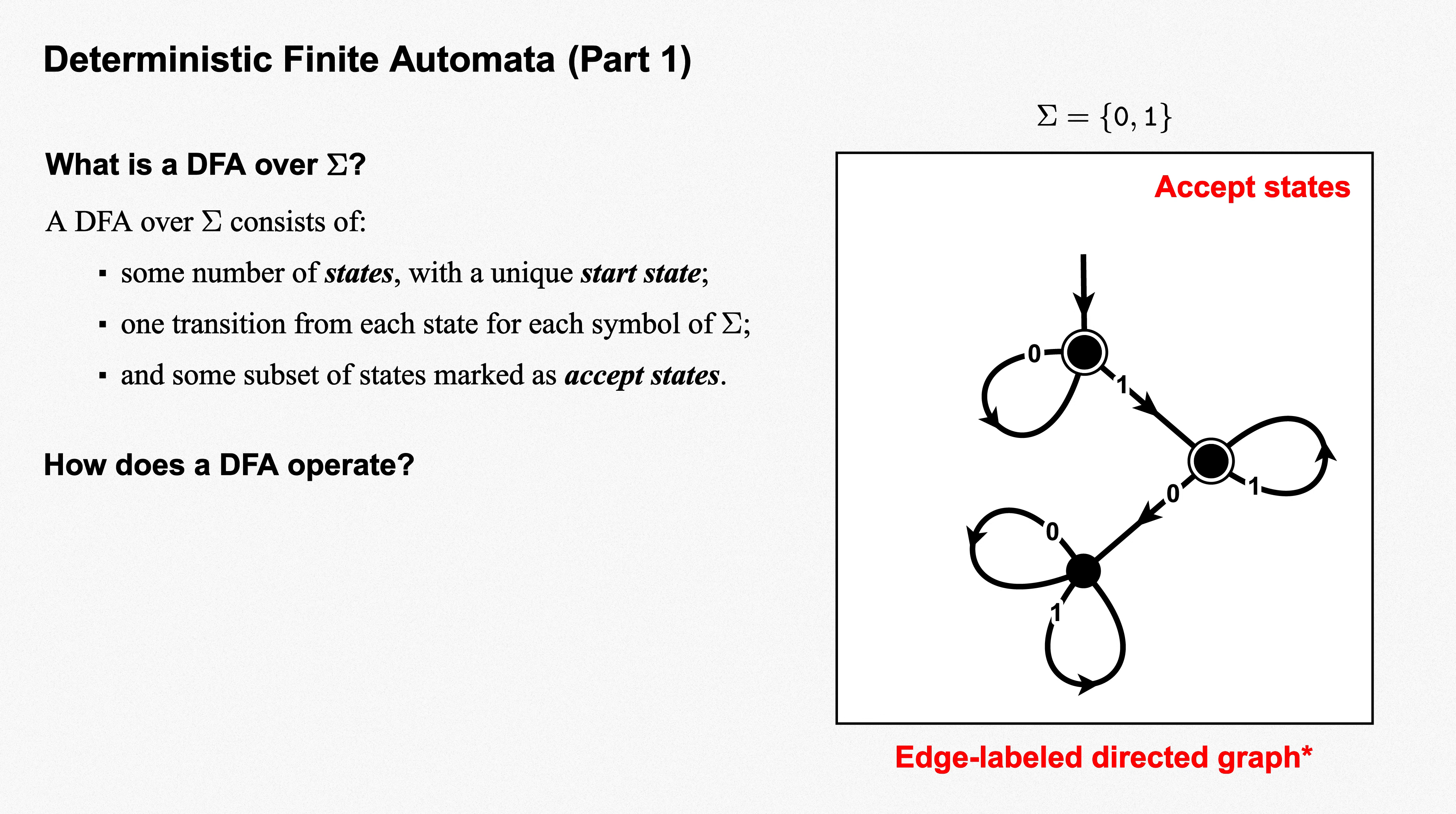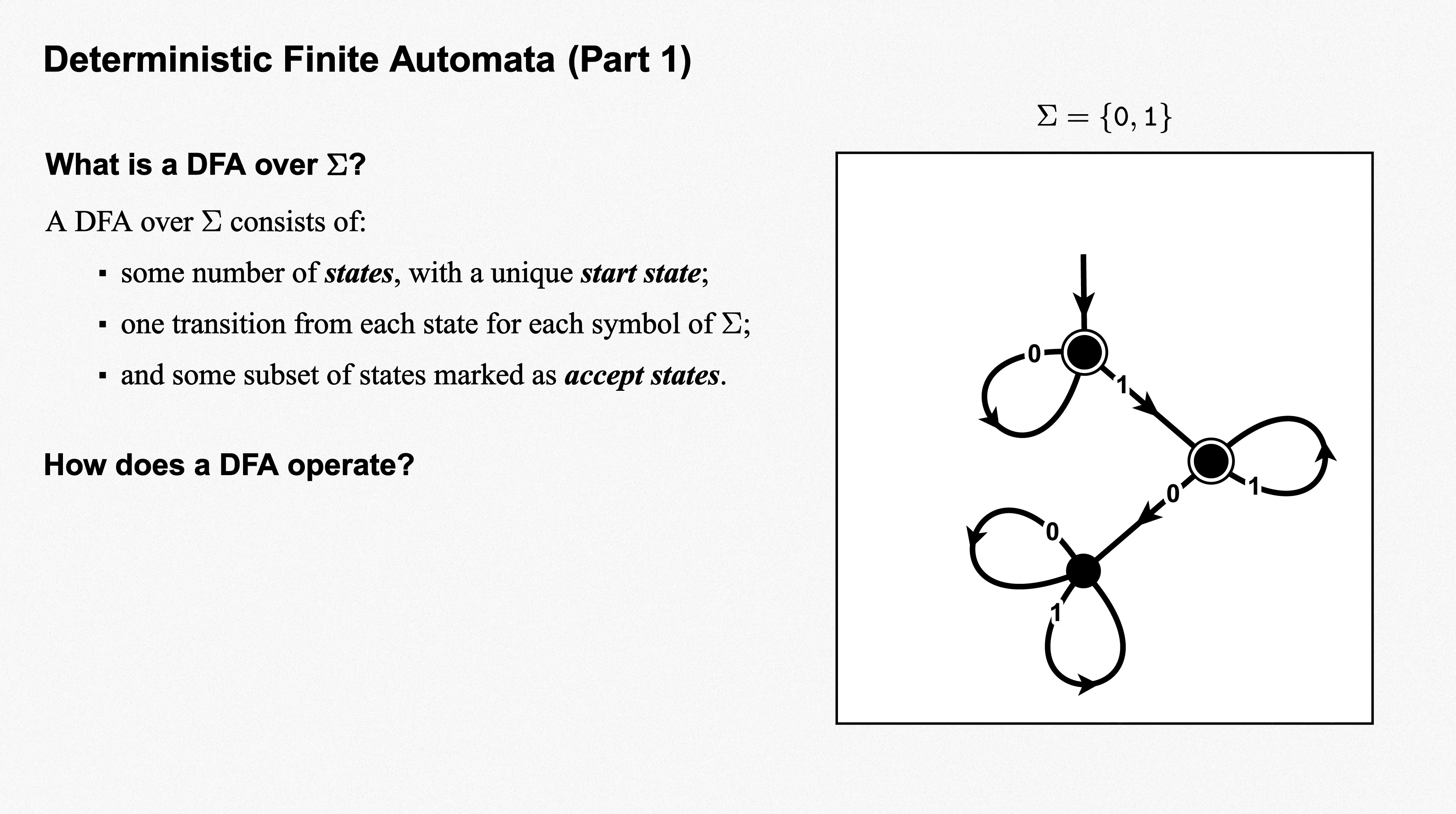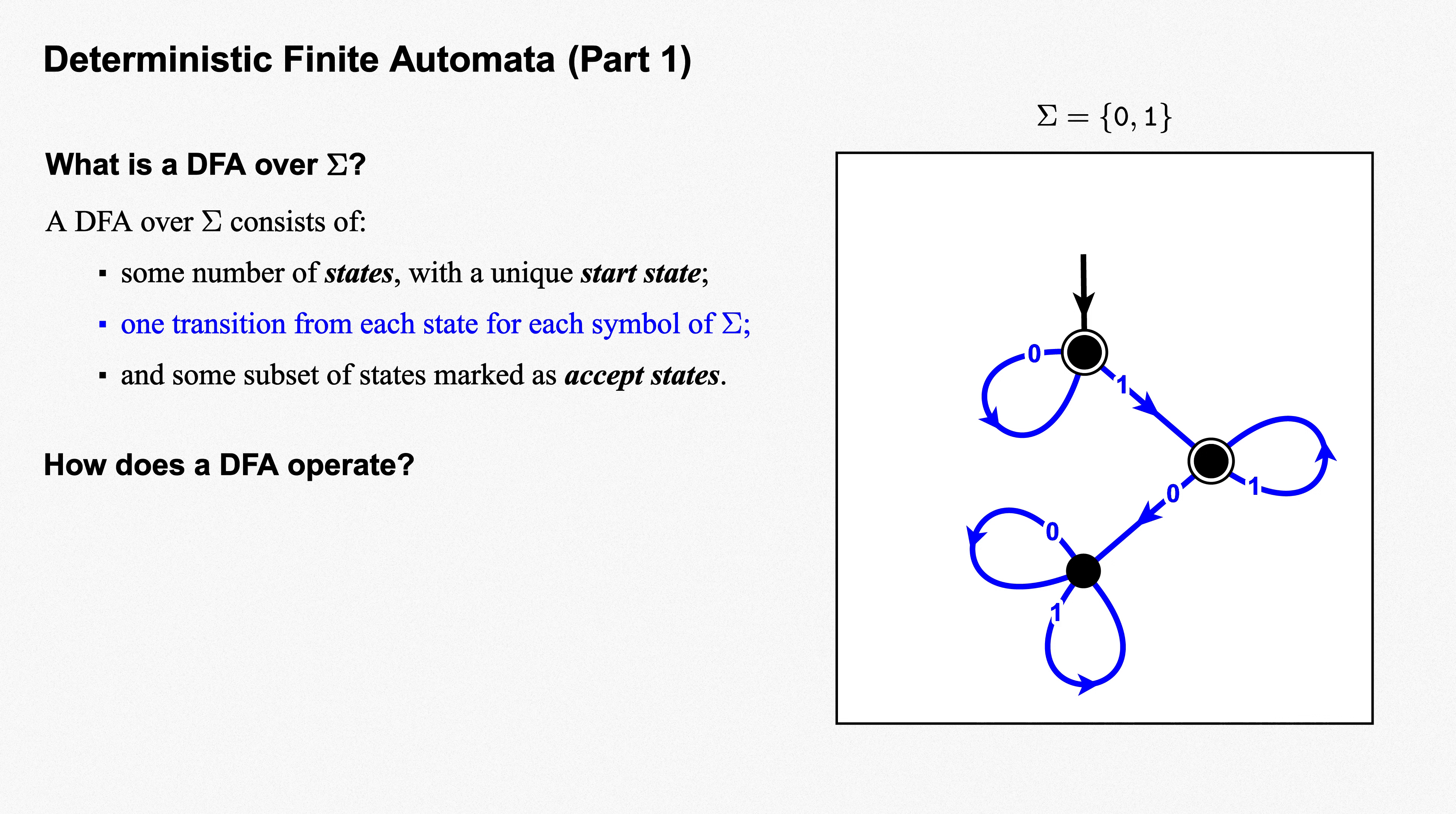Finally, we designate some subset of the states as accept states. We'll indicate these by circling them. For our example, let's choose the top two states. Note that we can select any subset we'd like of the states to be accept states. We could even select all of them, or none of them. But such DFAs aren't very interesting. What we see is a complete deterministic finite automaton. Some finite number of states, including a unique start state indicated by a loose incoming edge. One transition from each state for each symbol of our alphabet sigma, and some subset of the states marked as accept states.